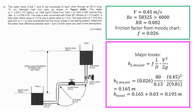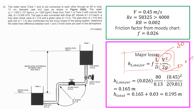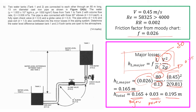For major losses, using the equation HL_major equals F times L over D times V² over 2G: F is 0.026, L is 80 meters, D is 0.13 meters, V is 0.45 m/s, and 2G is 2 times 9.81. Substituting gives 0.165 meters for the major losses. The total head losses is the sum of major and minor losses: 0.165 plus 0.03 equals 0.195 meters, which is the total losses in the piping system.